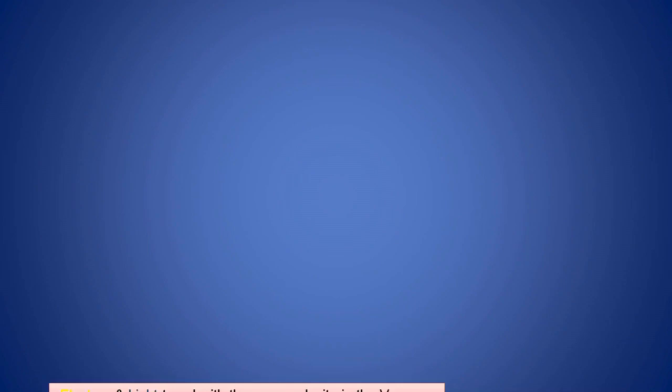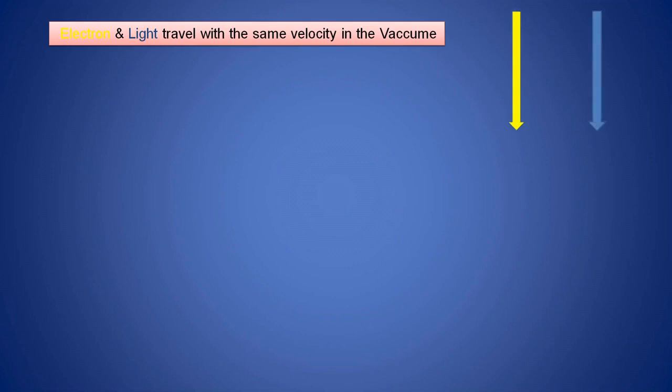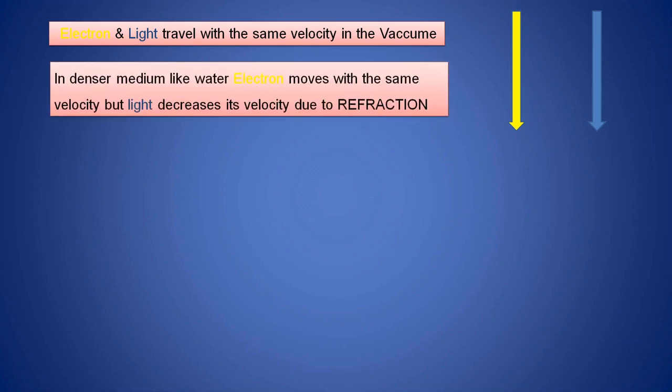What happens when we compare electron and light velocities? Electron and light travel with the same velocity in vacuum. Both electron and light have the same velocities in vacuum. The yellow color represents the electron and the blue color represents light. Both possess the same velocities in vacuum. Whereas in water, which is a denser material, the electron moves with the same velocity, but light decreases its velocity due to refraction.